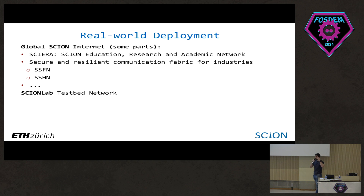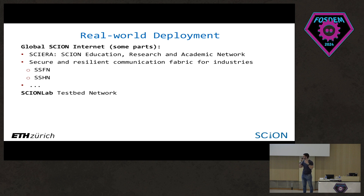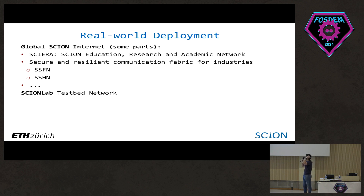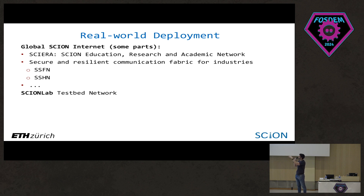I want to convey that there is already tangible, real deployment — this is not only a research project, though there is a lot of research in it. I will explain two networks: first, the global SCION internet, the real production network or fabric; and second, the SCIONLab testnet, which is a completely separate overlay network that anyone can use.